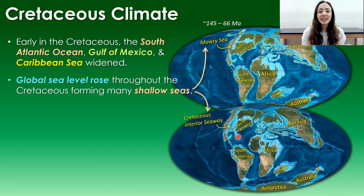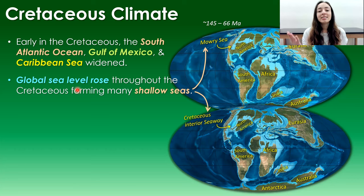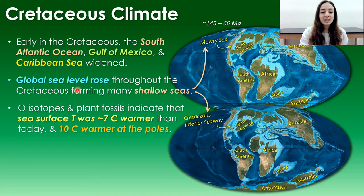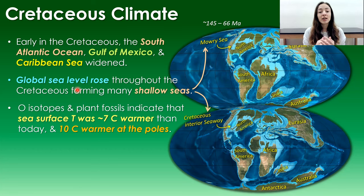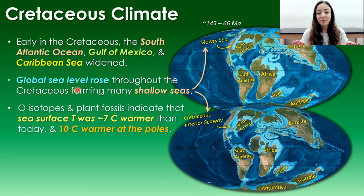Two reasons explain why those seas were there. First, global sea level rose. Second, tectonics — which I'll get to shortly. Oxygen isotopes and plant fossils indicate that sea surface temperature was around 7 degrees Celsius warmer than today, and near the poles it was even warmer — around 10 degrees Celsius above modern values — which is quite a significant change.